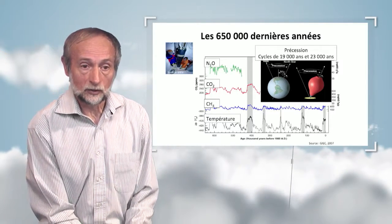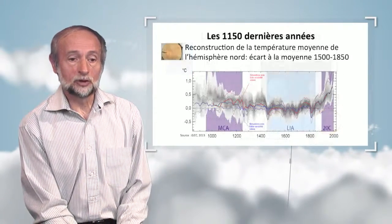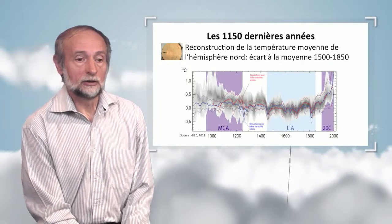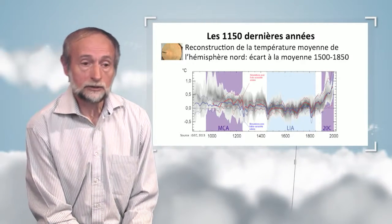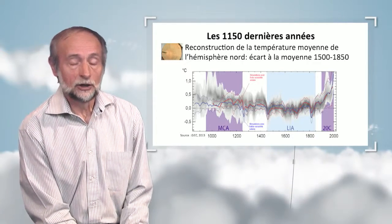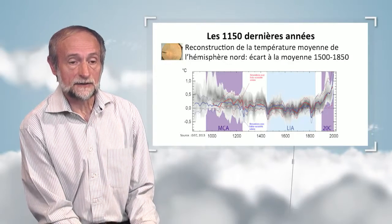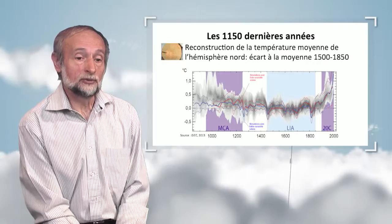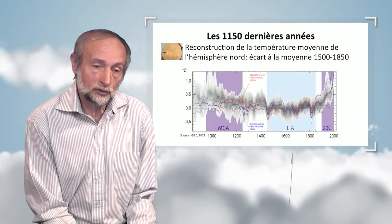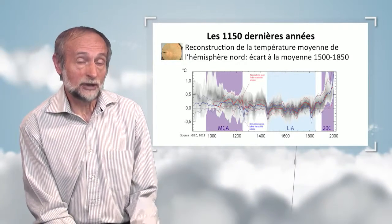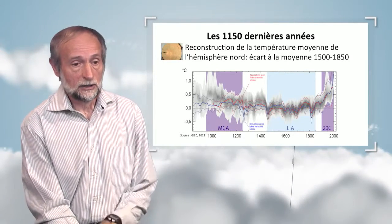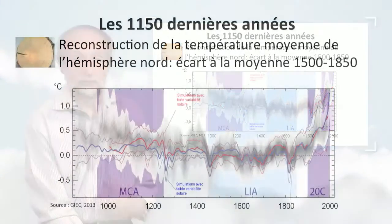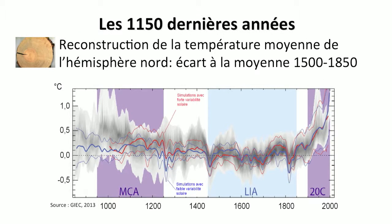We are aware of these fairly long periods of variation. Now, closer to our time — going back about 1,000 years — we see a reconstruction of the average temperature in the northern hemisphere between 1,500 and 1,850. This results from reconstructions not based on direct measurements, but on paleoclimatic indicators, for instance the thickness and number of tree rings. Here in gray we have the superimposed reconstructions, and in pink we see that the various reconstructions converge to give similar values.